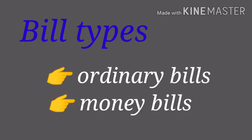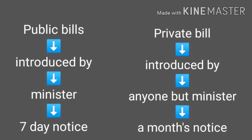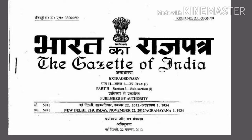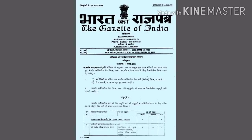There are two types of bills: ordinary bills and money bills. A bill other than a finance or money bill may be introduced in either house and requires to be passed in both the houses before it can be presented for the President's assent. Bills may be public bills, introduced by a Minister with a seven-day notice period, or private bills, introduced by anyone but a Minister, which need a month's notice period. Every bill introduced must be published in the Gazette — an official journal containing legal and state notices.